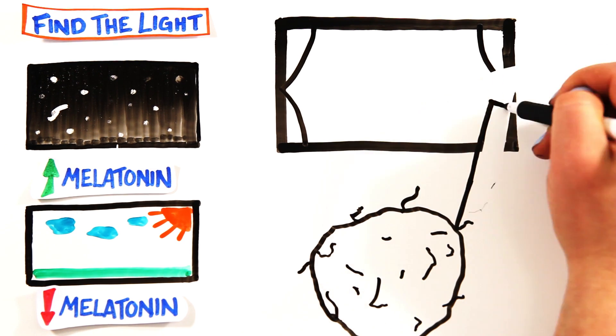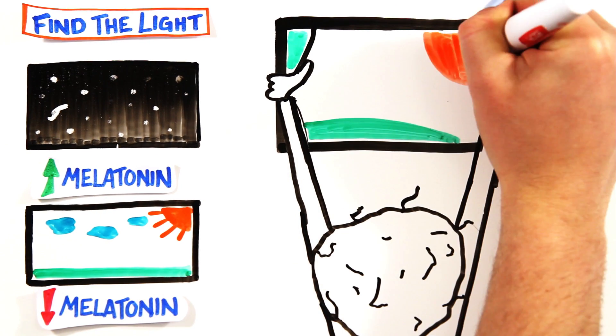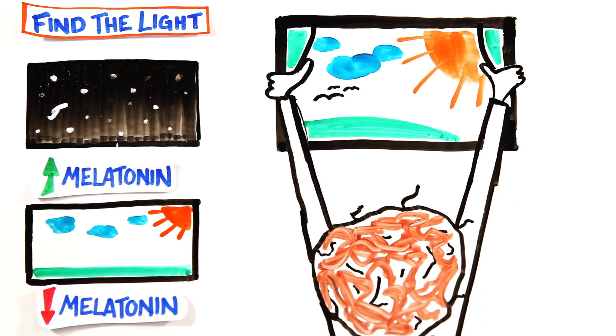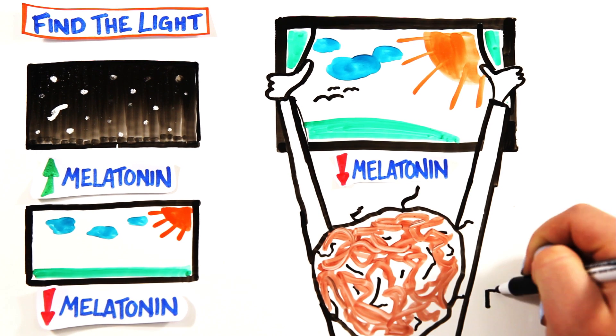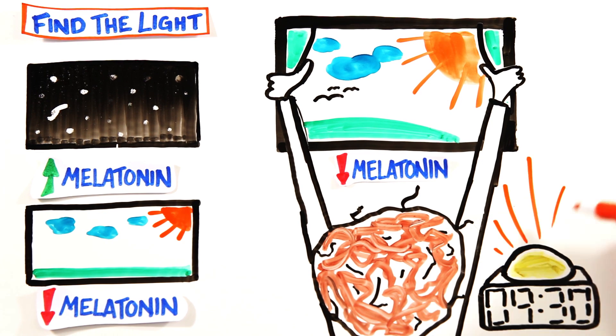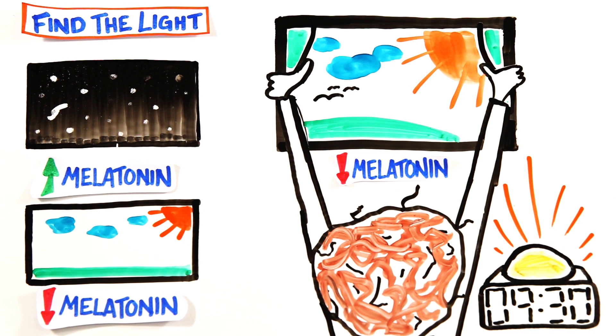So open those curtains, go outside, and expose yourself to light in the morning to decrease melatonin production and physiologically wake your body up. If you have to wake up in darkness, try an illuminating alarm clock. They slowly fill your room with light to wake you up naturally.